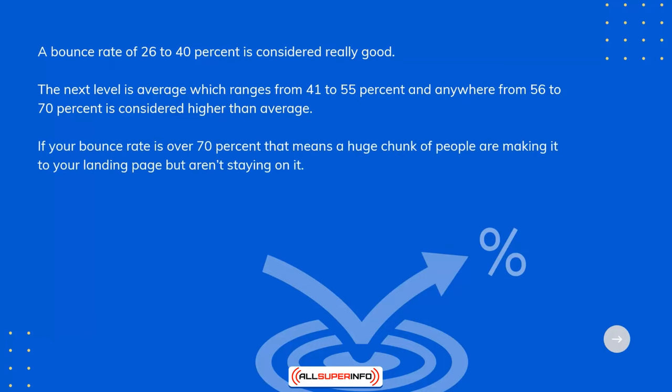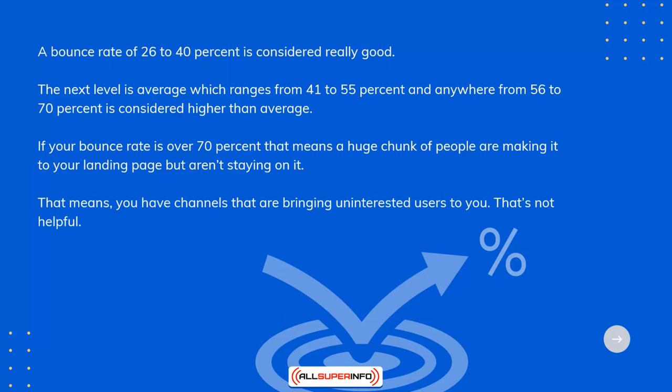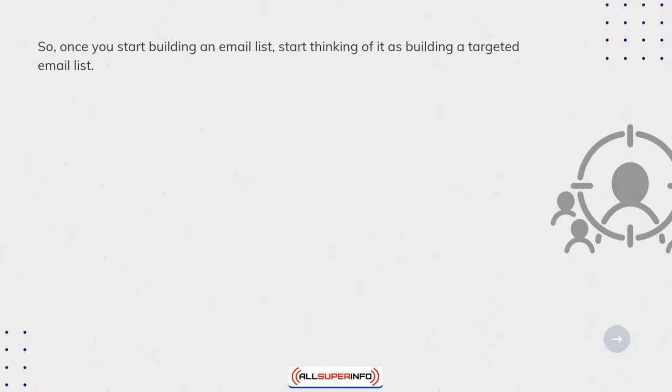Anywhere from 56% to 70% is considered higher than average. If your bounce rate is over 70%, that means a huge chunk of people are making it to your landing page but aren't staying on it — meaning you have channels bringing uninterested users to you. That's not helpful. So once you start building an email list, start thinking of it as building a targeted email list.